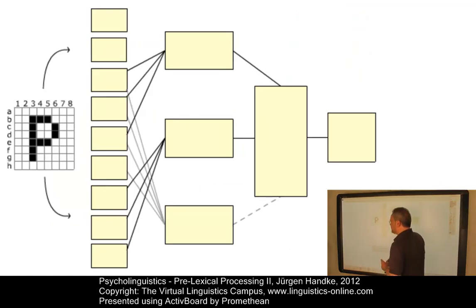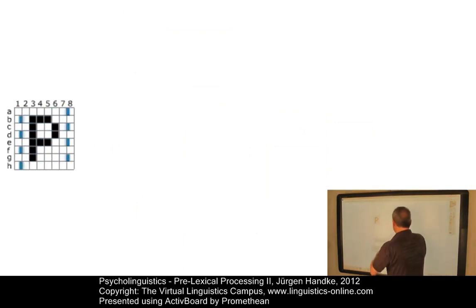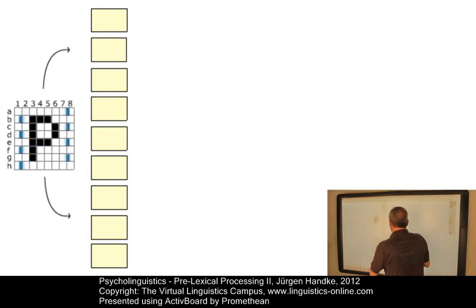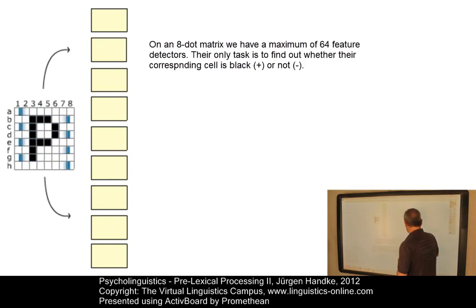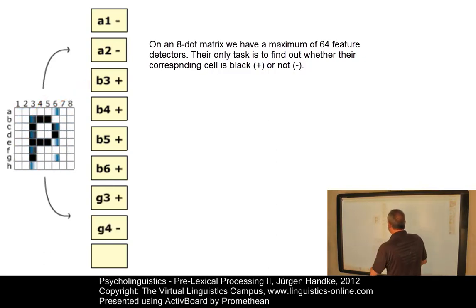Now, here we have a feature detector system which is going to identify the character P on an 8-dot pixel matrix. Let us start the feature detector. Well, first of all, the sans-serif letter P is scanned. Now, at the lowest level of analysis in a feature detector model, geometrical features such as horizontal lines, edge location, pixel position, color saturation, and so on and so forth are analyzed. Let us see. Let us look at the result. So, here we find a collection of arbitrary feature detectors. Some of them fire, that is, they are positive in terms of their value, for example, B3, 4, 5, and 6, and G3, but the others are not activated.